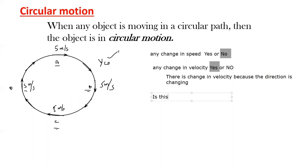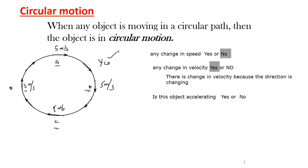Is this object accelerating? Acceleration means change in velocity. If there is a change in velocity, there is acceleration. Because the velocity is changing — acceleration depends not only on magnitude but also on direction — if the direction of velocity changes, the object will accelerate. And whenever the object is accelerating, there is a resultant force.